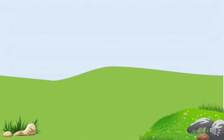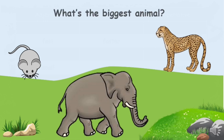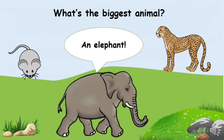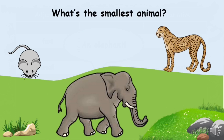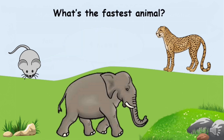Now we'll move to another activity. Look at the animals — this is a mouse, an elephant, and a cheetah. What's the biggest animal? Right, an elephant. What's the smallest animal? Excellent — a mouse. And what's the fastest animal? Yes, a cheetah.